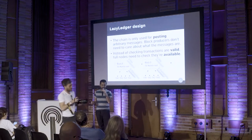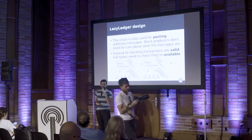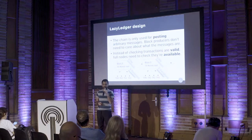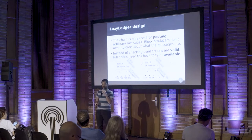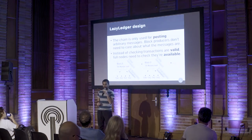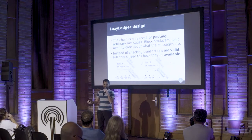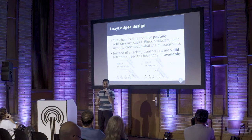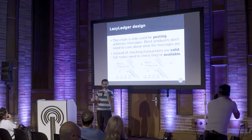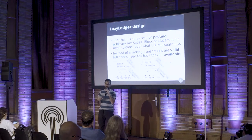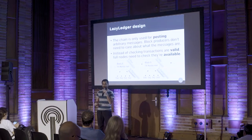For example, if someone posts a double spend transaction on the blockchain, that transaction will simply be silently discarded by the nodes that are computing the state of the chain locally. So what that looks like is a state transition function that cannot return an error. Instead of returning an error, the function would simply return the old state, so the state remains the same if the new transaction being posted is invalid. Because the chain is only used for posting arbitrary messages or transactions, the miners or block producers don't actually have to care about what's inside these blocks.